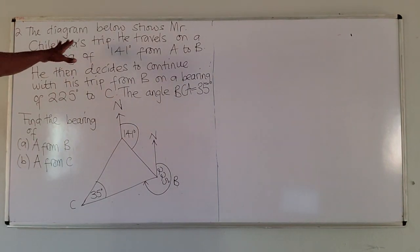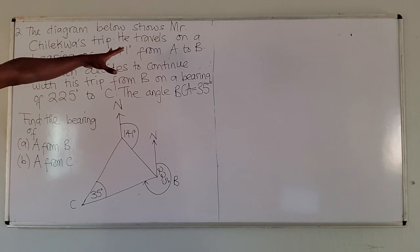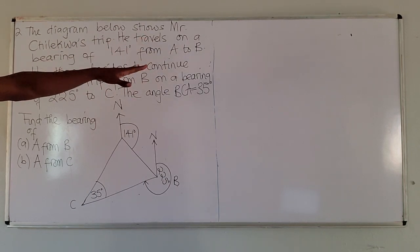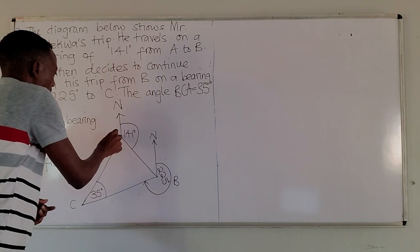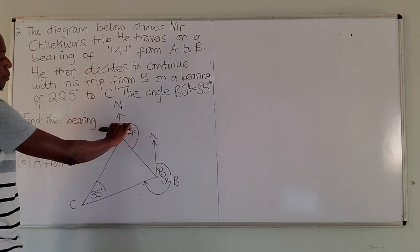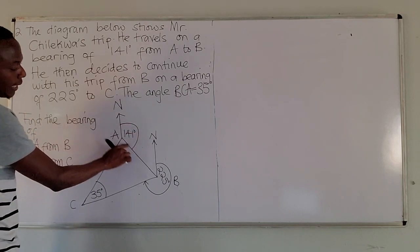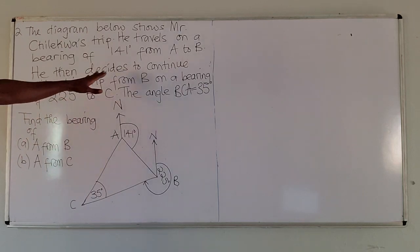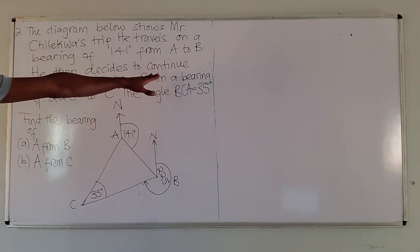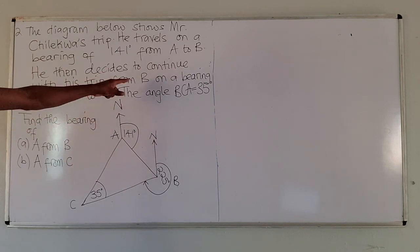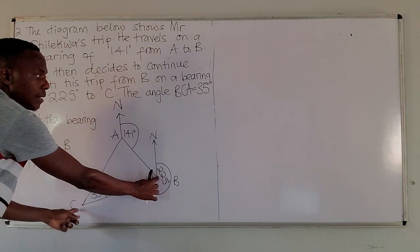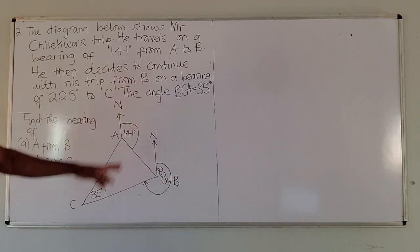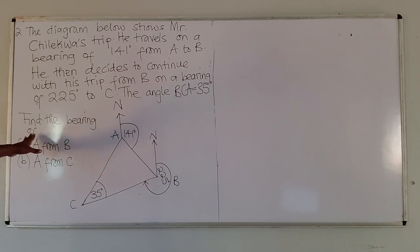Our second example: the diagram below shows Mr. Chileshe's trip. He travels on a bearing of 120 degrees from A to B. Again, you can see from A - we measure from the north of A until it hits the line joining A and point B. He then decides to continue his trip from B on a bearing of 225 degrees to C. Again, from B, moving in the clockwise direction, it hits the line joining C and B.